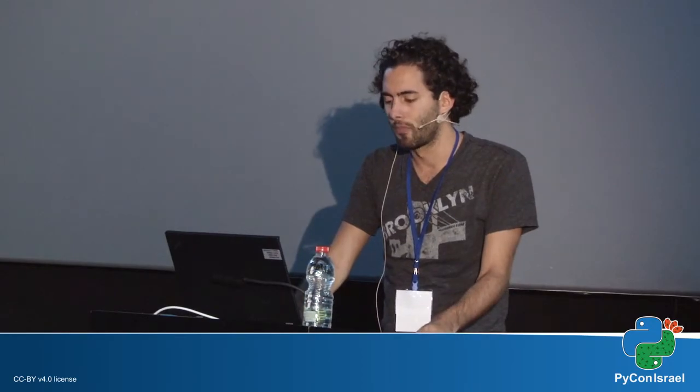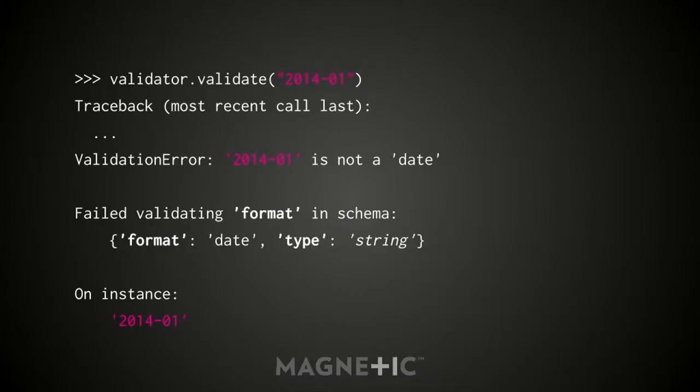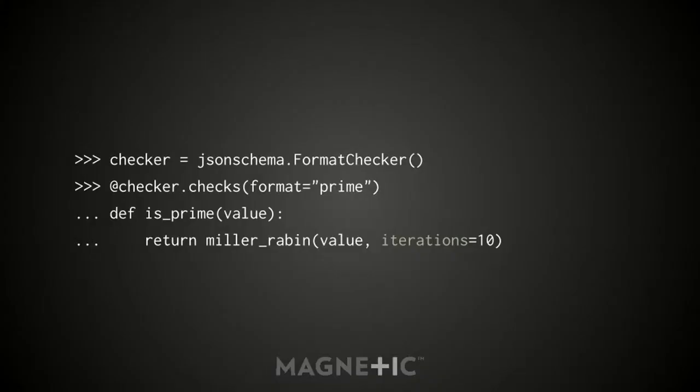Format is a way of saying what a particular instance should look like — for example, a string should be a date. For that you use a FormatChecker object, because by default the format validator is just metadata like description. You plug in the FormatChecker, pass in something that's not a date, and you get '2014-01 is not a date.' You can also define your own: if you need to validate whether an instance is prime, you create a FormatChecker, decorate a function to do the validation, and now you can write schemas with type integer format prime.